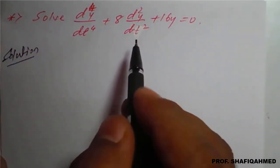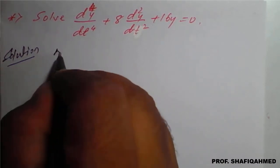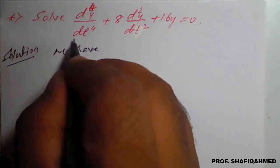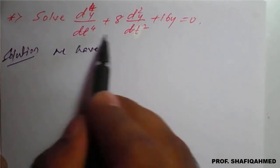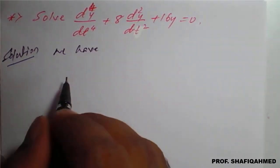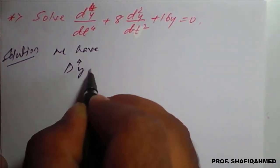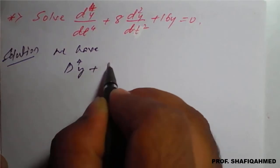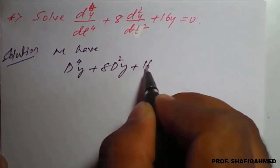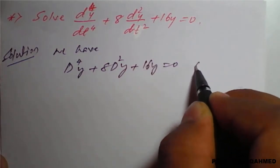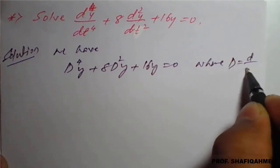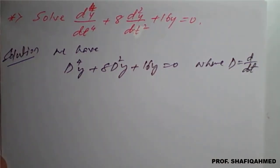The above differential equation we can write it as: D⁴y plus 8D²y plus 16y equal to 0, where capital D denotes d/dt with respect to t. Be careful while writing the solution.